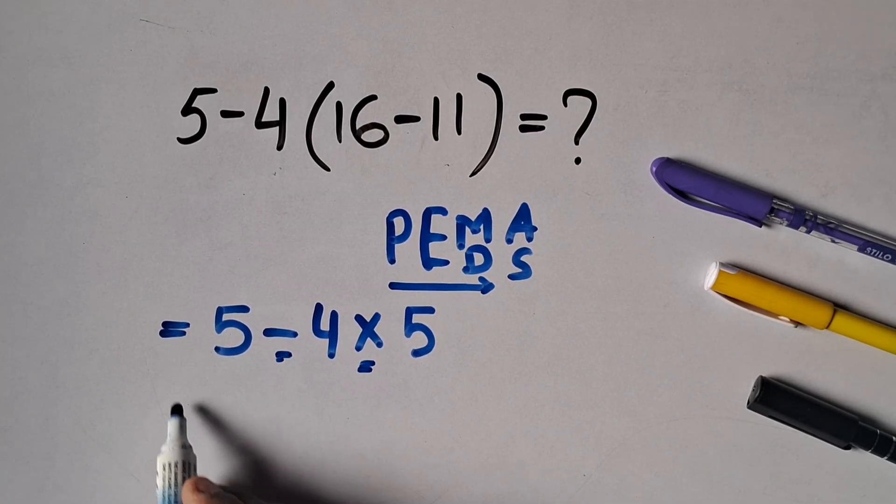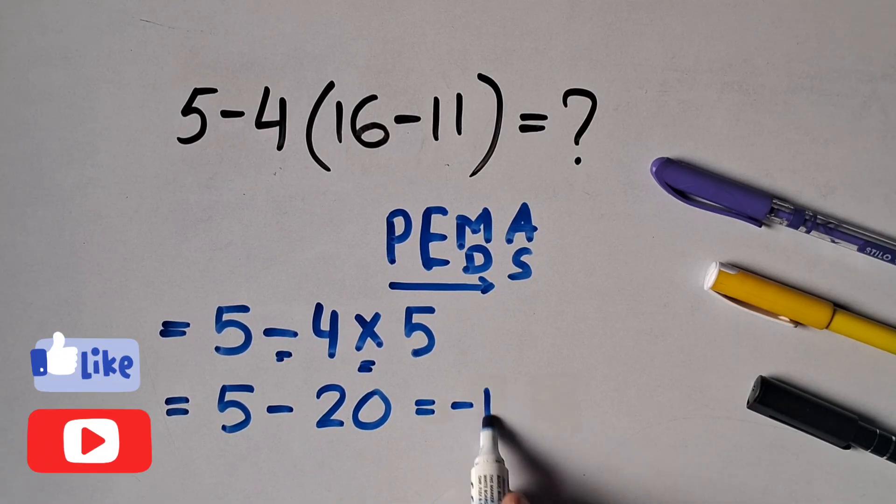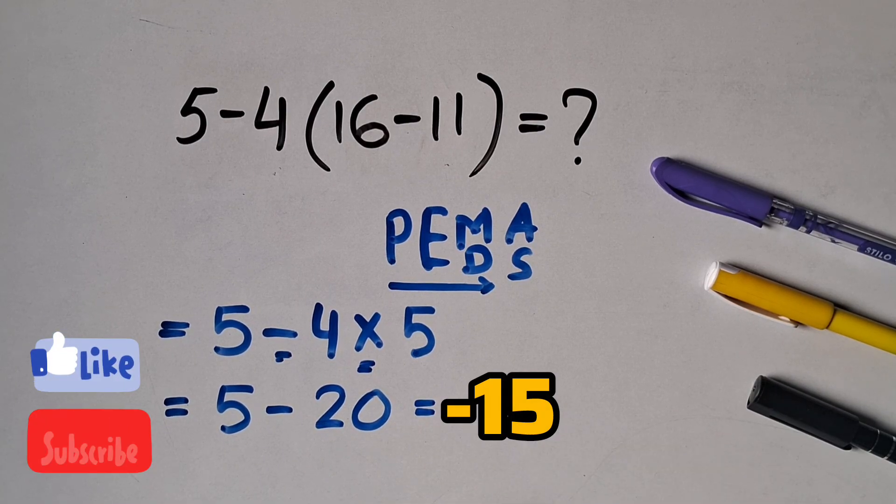multiplication has higher priority than subtraction. So 5 minus 4 times 5: 4 times 5 equals 20, and 5 minus 20 equals negative 15.